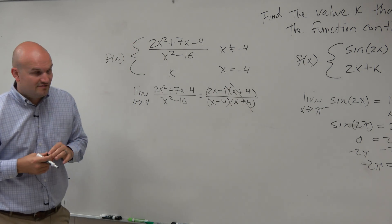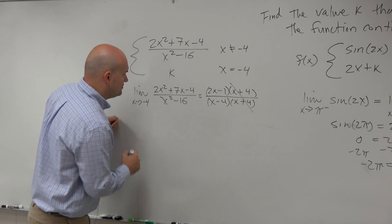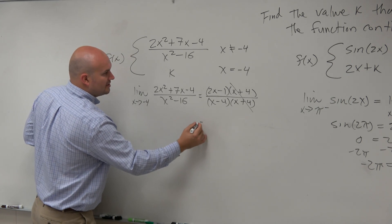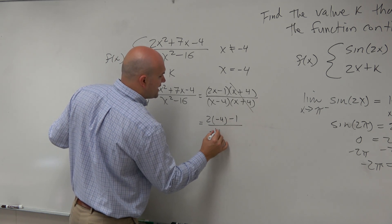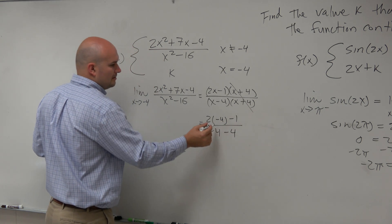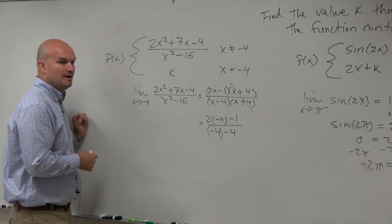So let's go ahead and divide out. So now, when we evaluate the limit, we're going to have 2 times negative 4 minus 1 all over negative 4 minus 4, right?